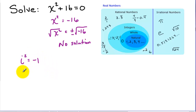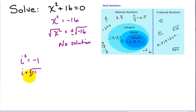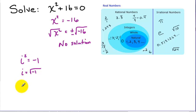If we take the square root of both sides, we get i is equal to the square root of negative 1. However, this particular definition of the imaginary unit can be problematic if we apply some of our old rules about radicals. So the more common definition of the imaginary unit is i squared equals negative 1. The i stands for the imaginary unit.